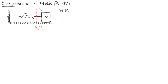Specifically, we're going to talk about a mass oscillating on a spring of stiffness K about an equilibrium position that we'll call X equals zero. So our X coordinate is a displacement from equilibrium. In that case, the spring force is one-dimensional and is given as minus K times the displacement from equilibrium. And we know that this force is conservative.